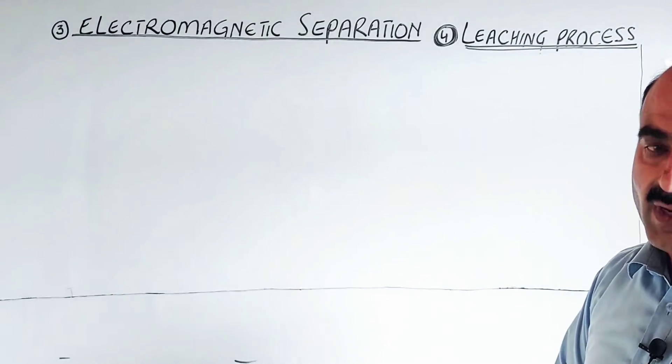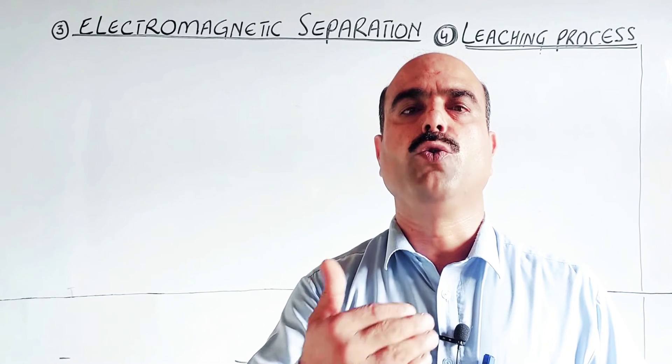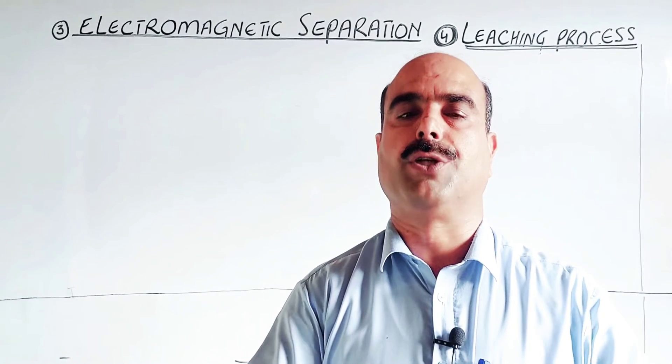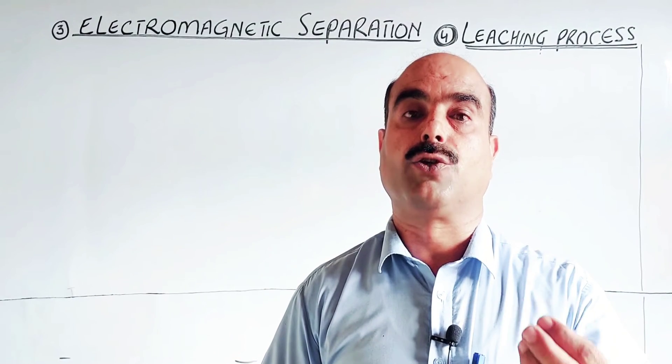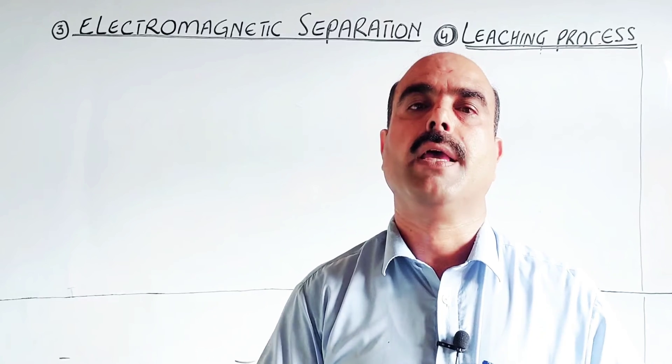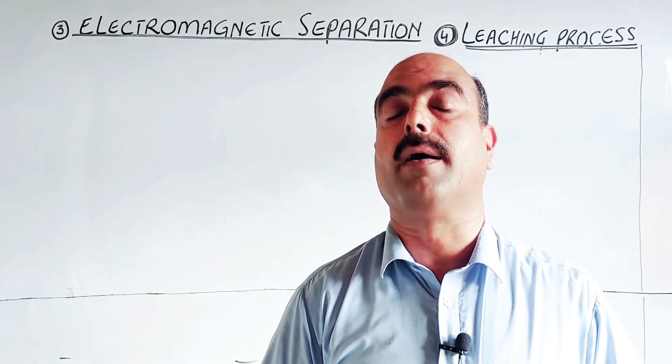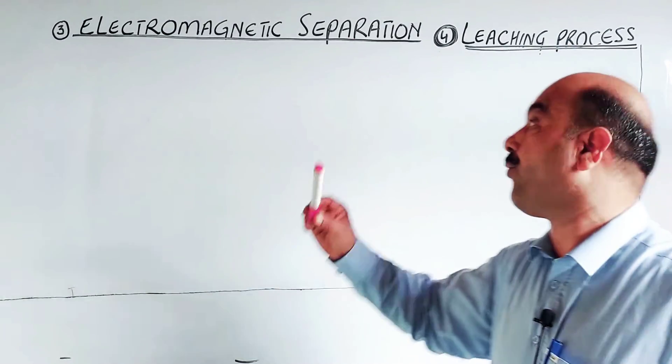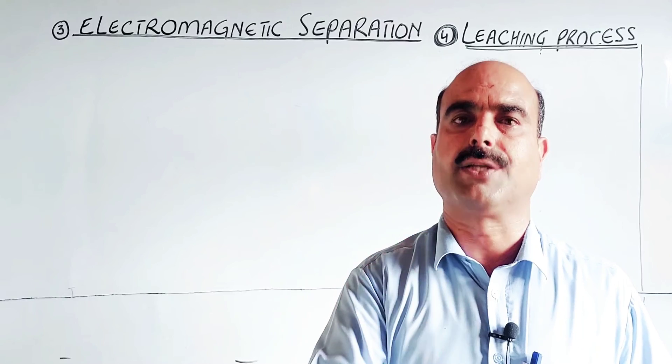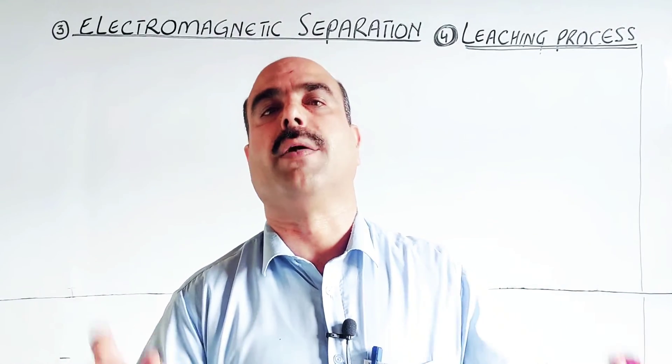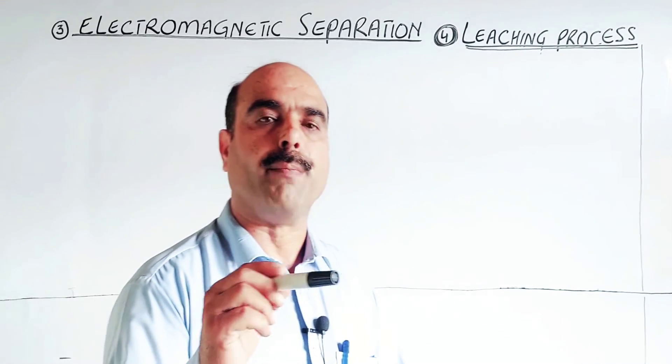The topic is concentration of ore. Useless material will be removed and the metallic part or compound will be separated. The first method is hydraulic washing, the second method is froth flotation process, the third method is electromagnetic separation, and the fourth method is leaching process. This is ore dressing, ore enrichment, ore concentration, where the gangue is removed and impurities are removed, and the useful metallic portion is separated.